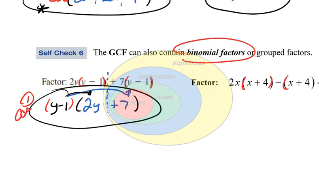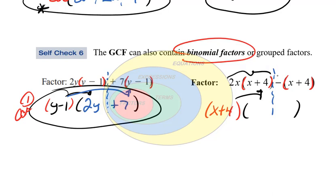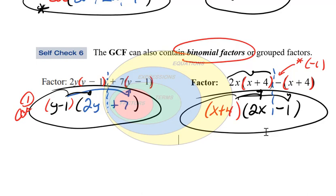For the last one, we do see common binomial factors. The two terms are separated, and the common binomial factor is x plus 4. What would I distribute to these two terms to get that? I would need 2x times x plus 4 to generate the first term. Then there's a negative sign in front, which is a factor of negative 1, so I distribute to a negative 1 to get that second term. So this would be the factored expression. Looking for greatest common factors in all the terms — monomial or binomial.